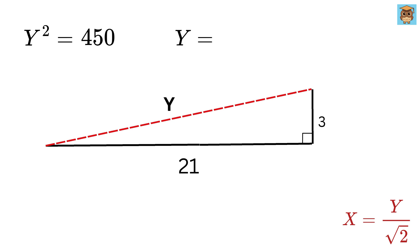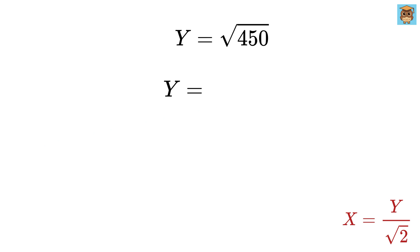So y = √450, which can also be rewritten as 225 × 2 or 15² × 2. Take this 15 outside and thus y = 15√2.